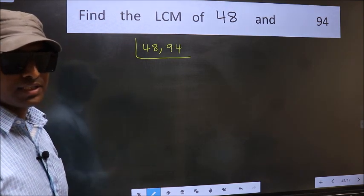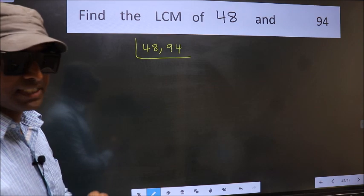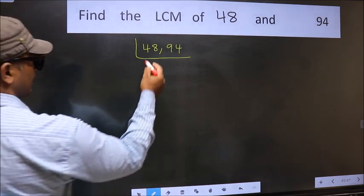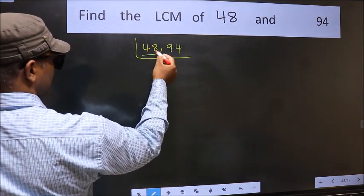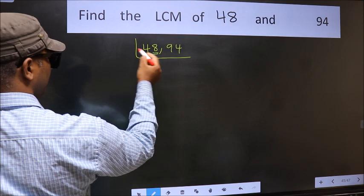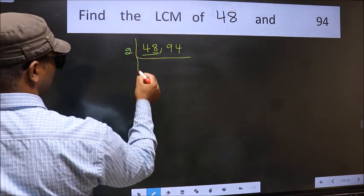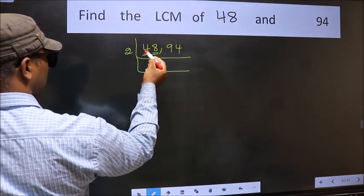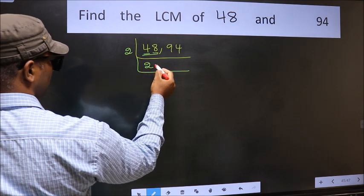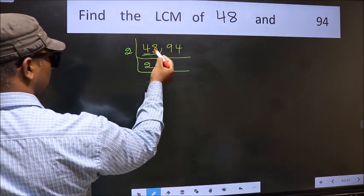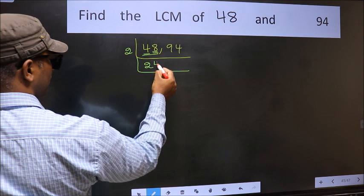Now focus on the first number, which is 48. The last digit is 8, which is even, so take 2. The first number is 4 — when do we get 4 in the 2 table? 2 times 2 is 4. The other number is 8 — when do we get 8 in the 2 table? 2 times 4 is 8.